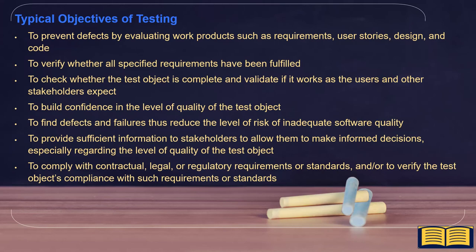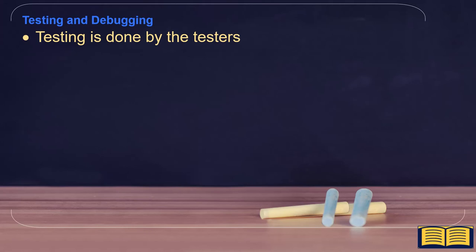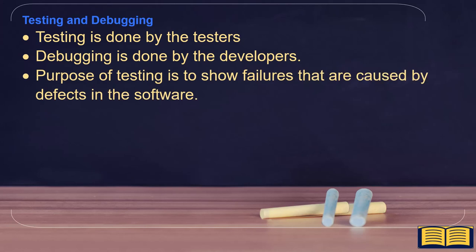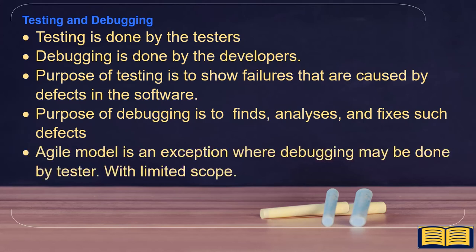After the objectives of testing, we covered testing and debugging. Testing is done by testers; debugging is done by developers. The purpose of testing is to show failures caused by defects in the software. The purpose of debugging is to find, analyze, and fix such defects. In the Agile model, debugging may be done by the tester with limited scope as an exception.